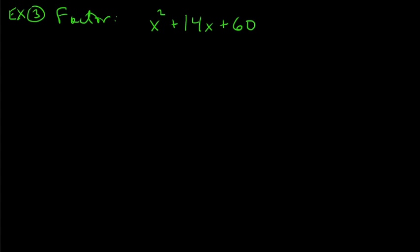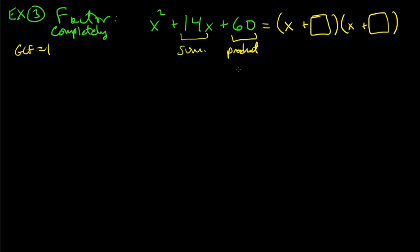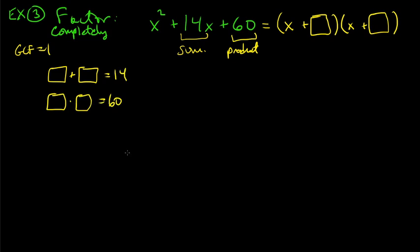Factor completely x² + 14x + 60. GCF is 1, three terms. We're looking for two numbers whose product is 60 and whose sum is 14. You might want to work with the sum first, but I find it easier to start with the product. Let's go through the factor pairs of 60.